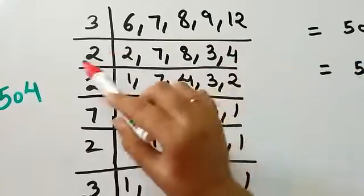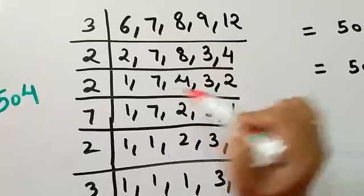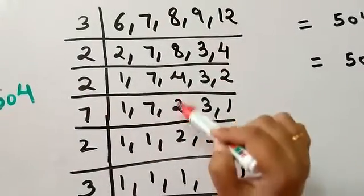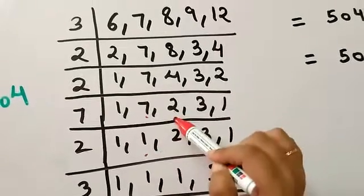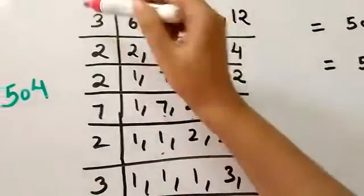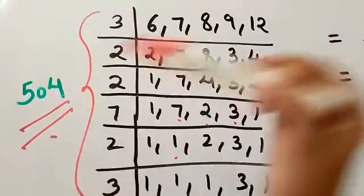Now divide by 2: 2, 7, 4, 3, 2. Again by 2: 1, 7, 2, 3, 1. Again by 2: 1, 7, 1, 3, 1. Then by 7, then by 3. Take the product of this and you will get 504.